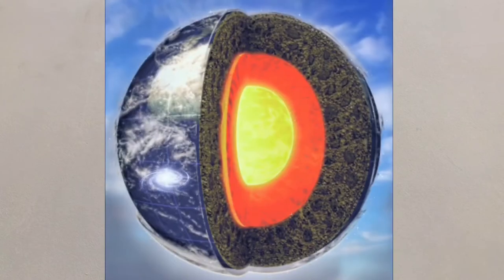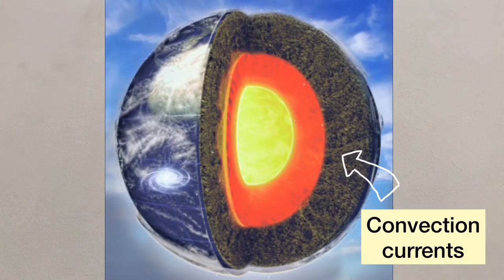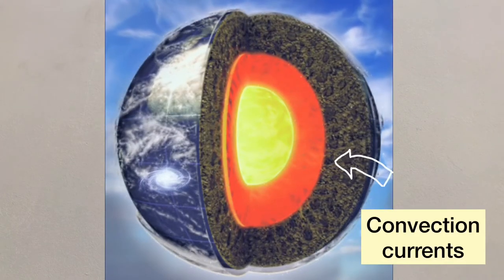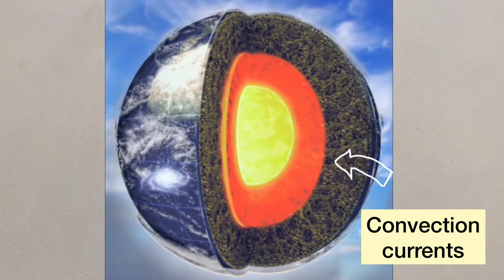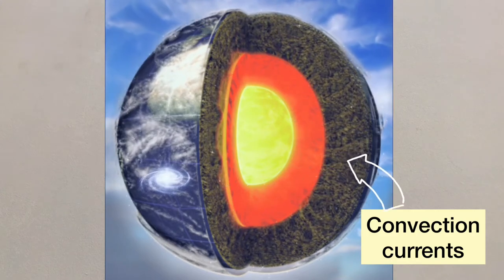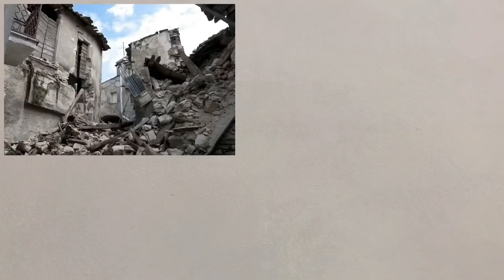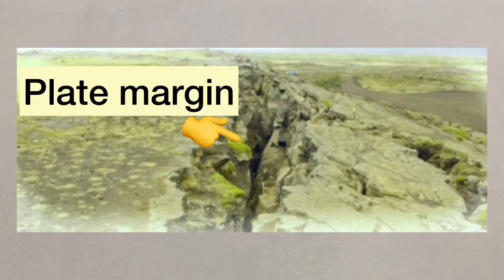The plates will move due to the convection currents in the mantle, and it's where these tectonic plates meet that earthquakes and volcanoes are more likely to occur. We call the meeting place a plate margin.